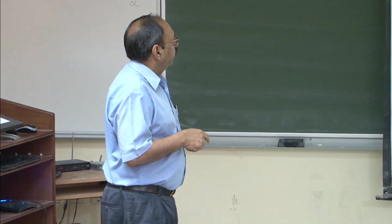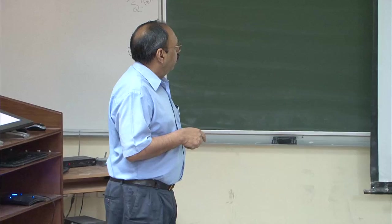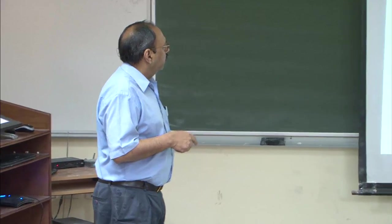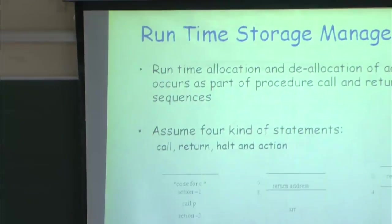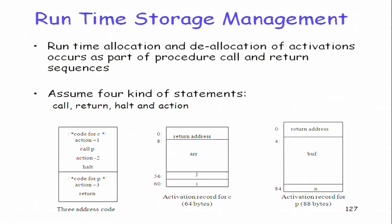What we are going to assume at this point is that there are 4 types of instructions: call, return, halt (the final stop), and action (statements which are not procedure or function type). These are like findings of Boolean flow and so on, but the important part is really the call and return.